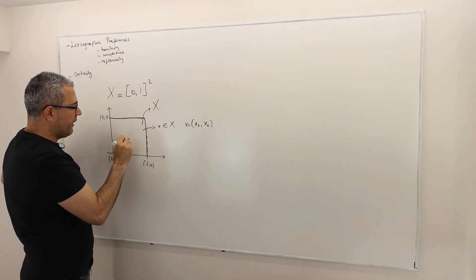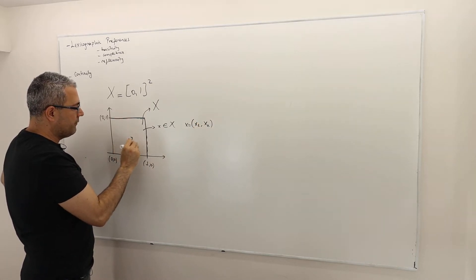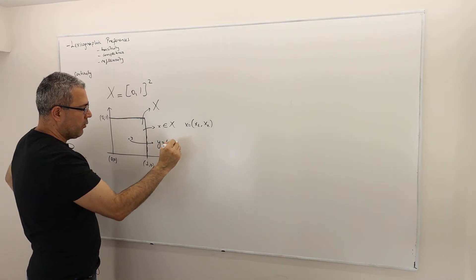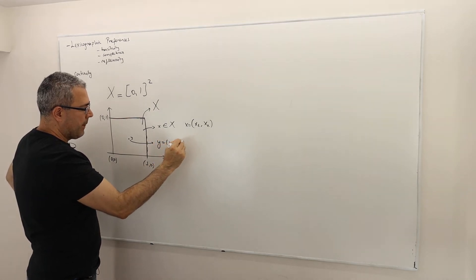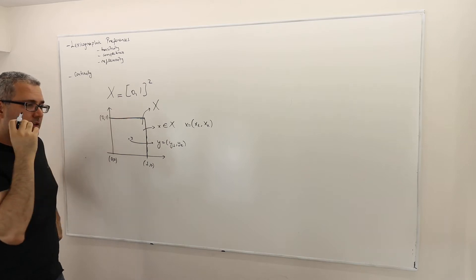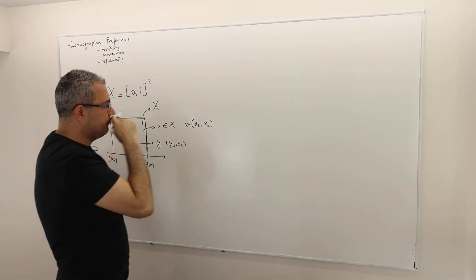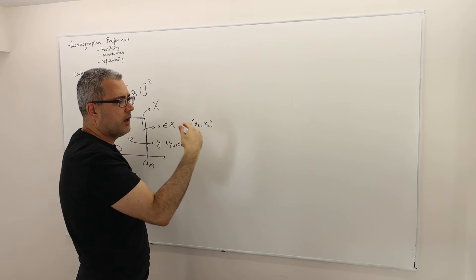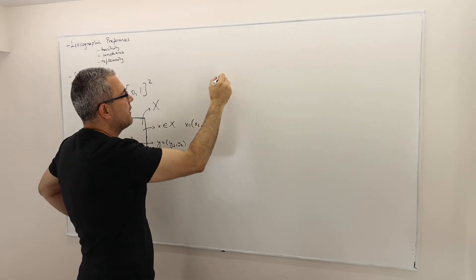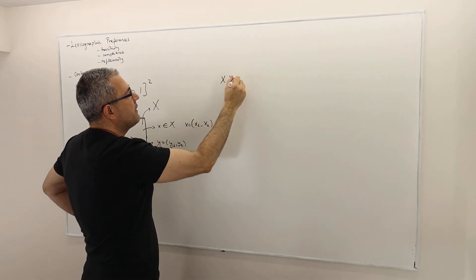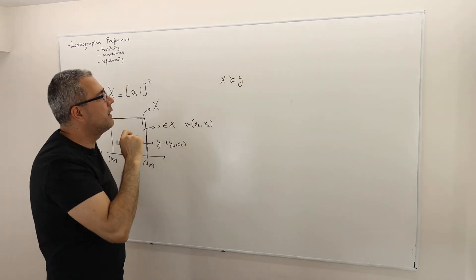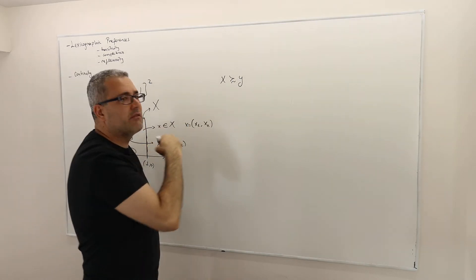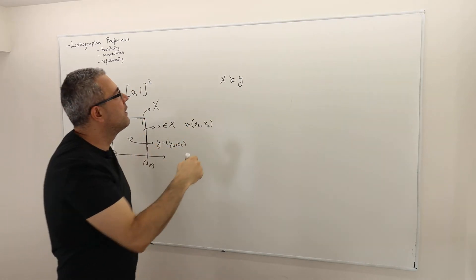If I pick another vector Y, so this is basically another vector y1, y2. And so the lexicographic preferences compare x and y in this fashion. X is at least as good as Y - this is our notation. I read it as 'at least as good as.' Some textbooks prefer to denote it as x R y, at least as good as.